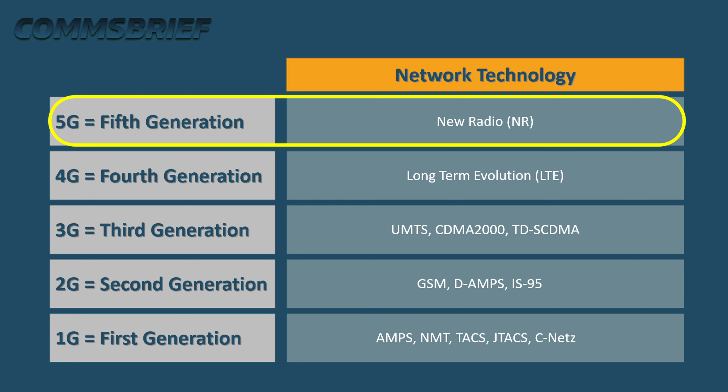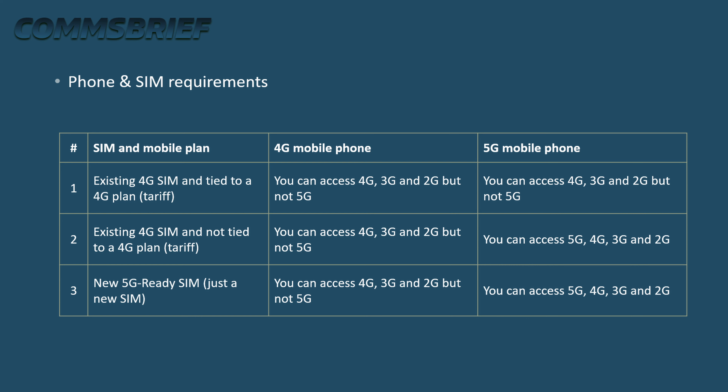5G can deliver much higher speeds than 4G networks. Before diving into more advanced areas of 5G, let's answer some basic questions as a customer about phone and SIM requirements for 5G. The first step towards accessing 5G is to get a 5G compatible mobile phone. A 4G phone will not allow you to access 5G because it only supports LTE and earlier technologies. 5G uses NR technology which requires new hardware.